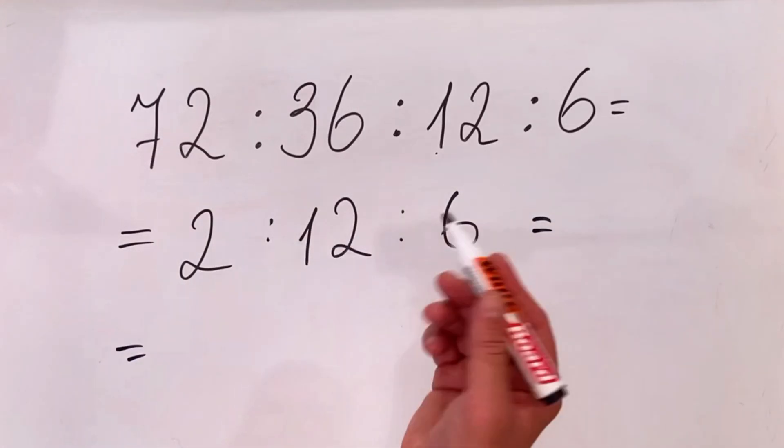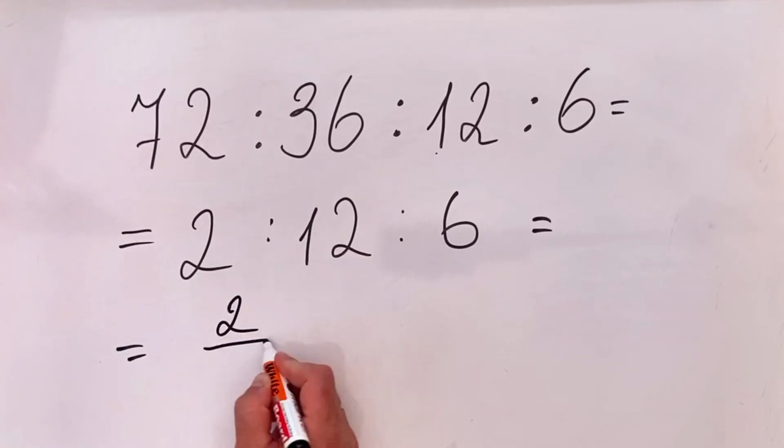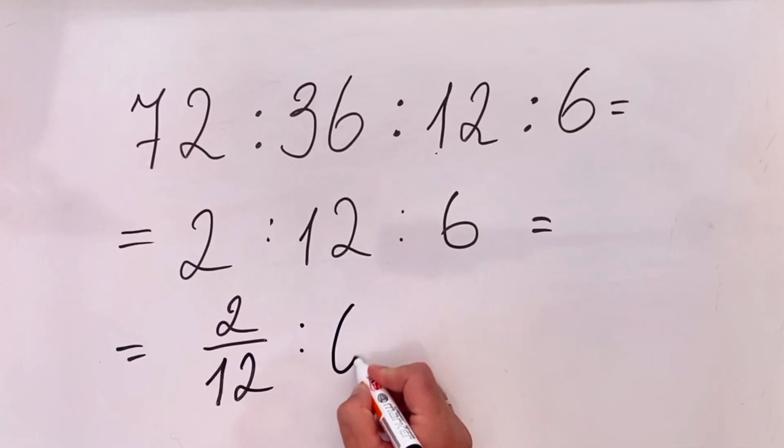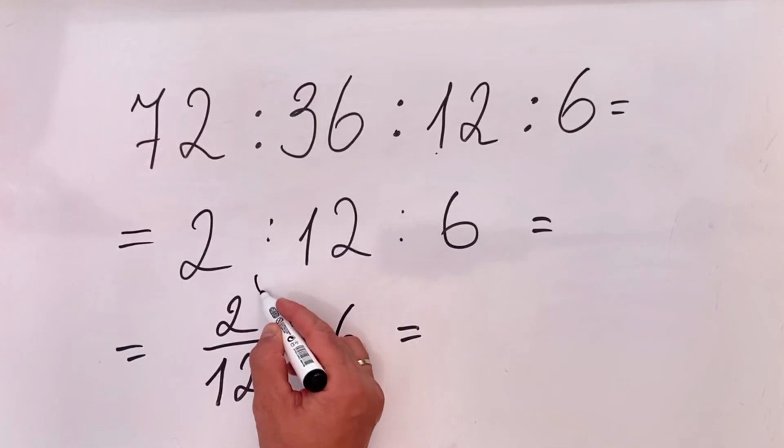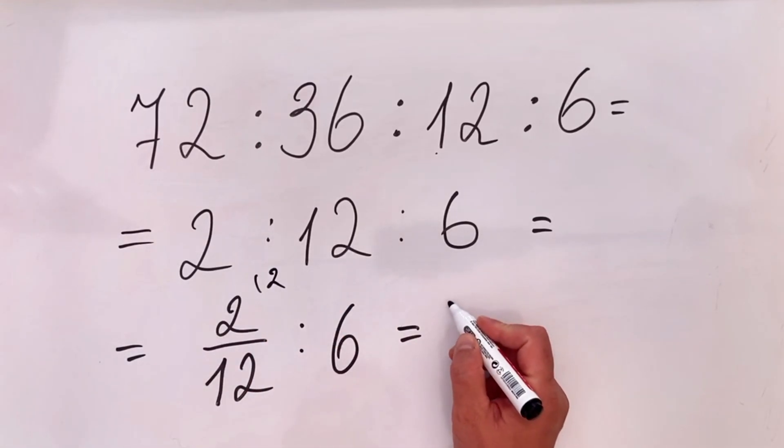2 divided by 12—this is a fraction, we can put it as a fraction—then we have divided by 6. 2 divided by 12, we can simplify it by 2, which is 1 over 6, divided by 6.